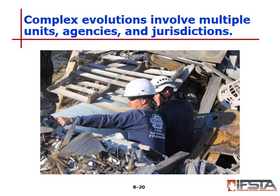Complex evolutions may involve multiple units, agencies, and jurisdictions with scenarios requiring high levels of cooperation and coordination. They may include company officer planning and participation. Examples include structural fires, urban search and rescue incidents, mass casualty incidents, or hazardous materials incidents. All should include NIMS and ICS components to help ensure safety and accountability of participants.